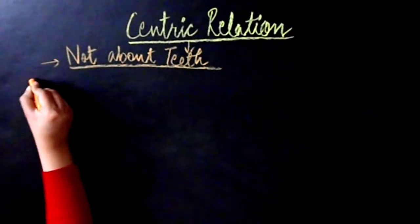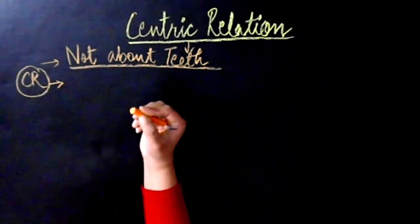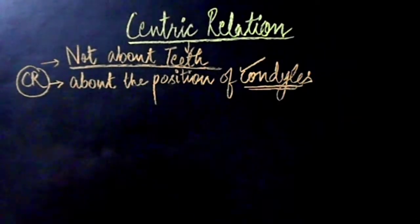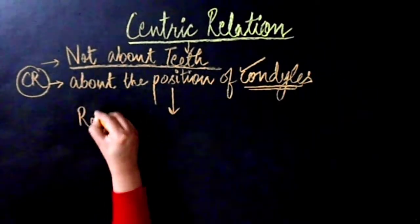Actually, centric relation is not about teeth. It is about the position of the condyles, which in turn determines the relationship of mandible to maxilla, even when no teeth are present.